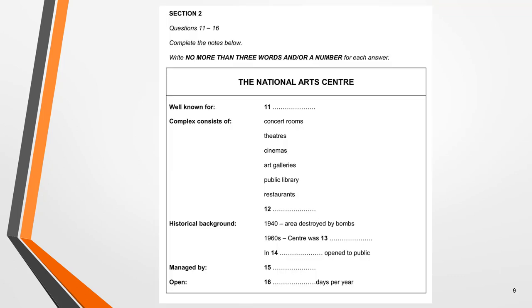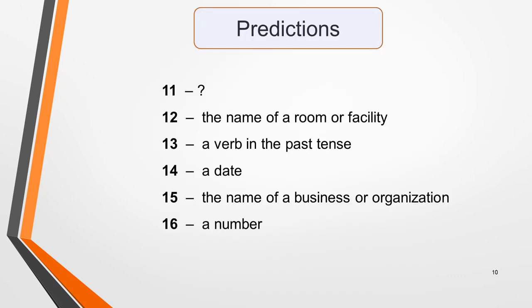Have a go at predicting some of the answers in our note completion practice question. There are six answers to fill in, numbers 11 to 16. Pause the video to do this, then have a look at my predictions on the next slide. Here are my predictions: Answer 11 I'm not sure about — don't waste time thinking too hard, just note down what you can easily predict. Answer 12 will be the name of a room or facility. 13 will be a verb in the past tense. 14 a date. 15 the name of a business or organisation. And 16 will be a number. You can see that just a few seconds spent doing this can give you a lot of information about what you need to listen for, greatly improving your chances of identifying the correct answers.